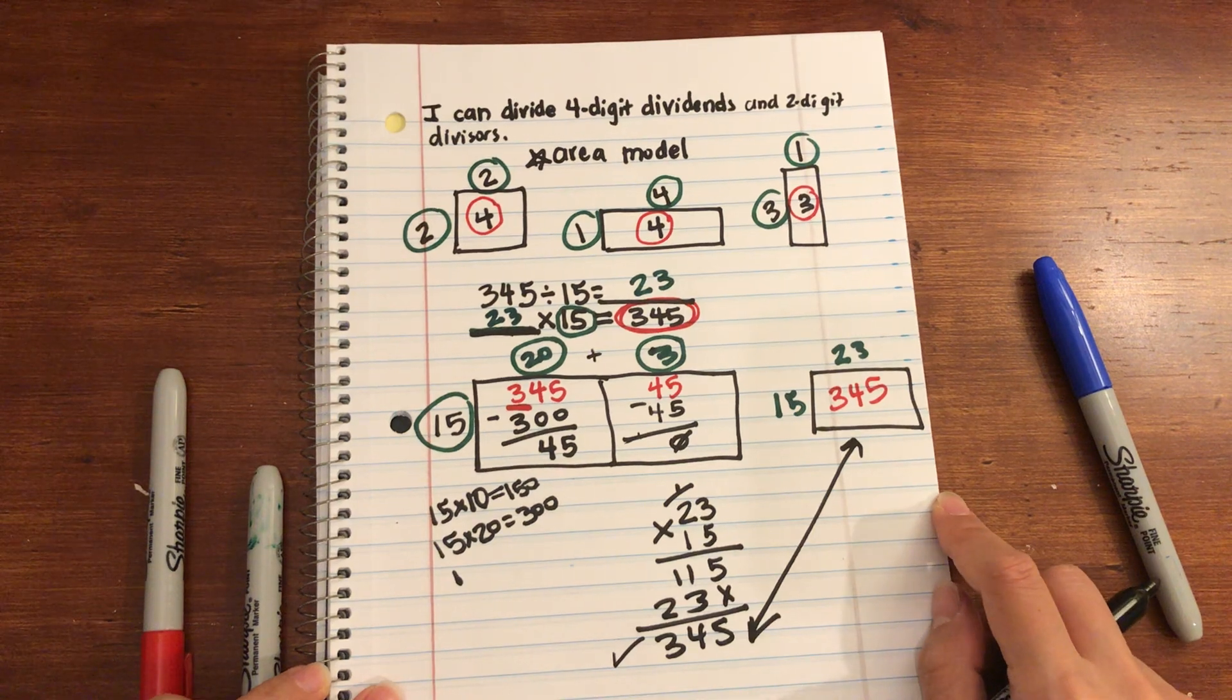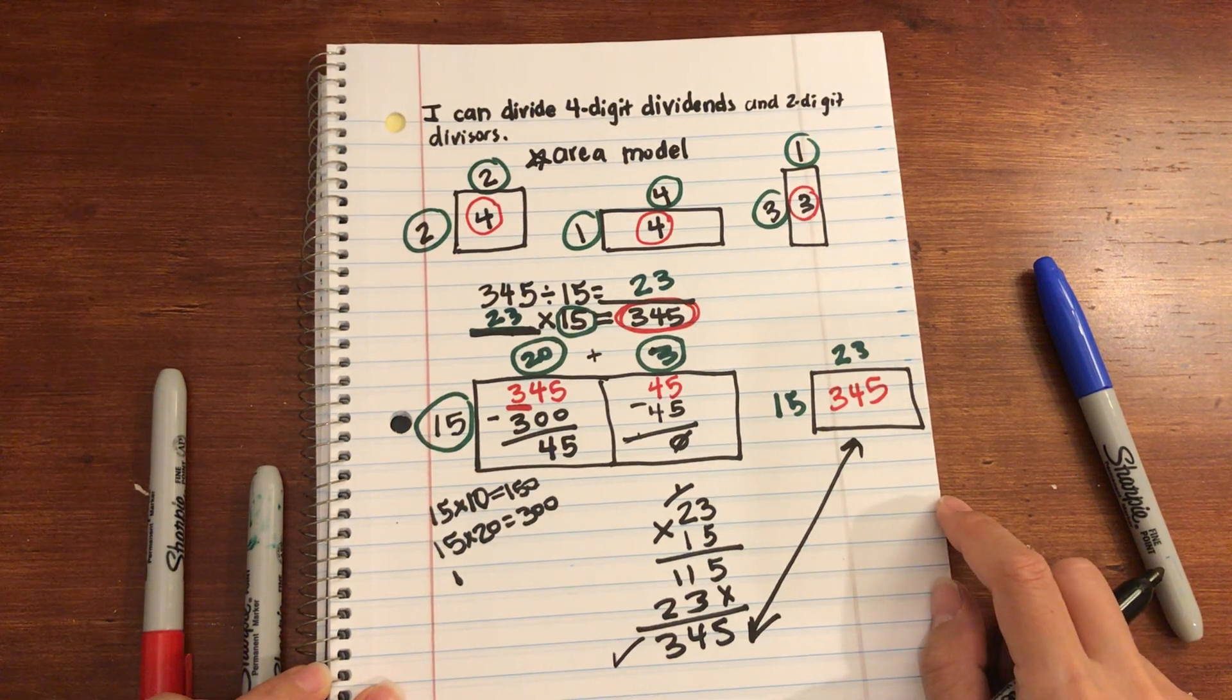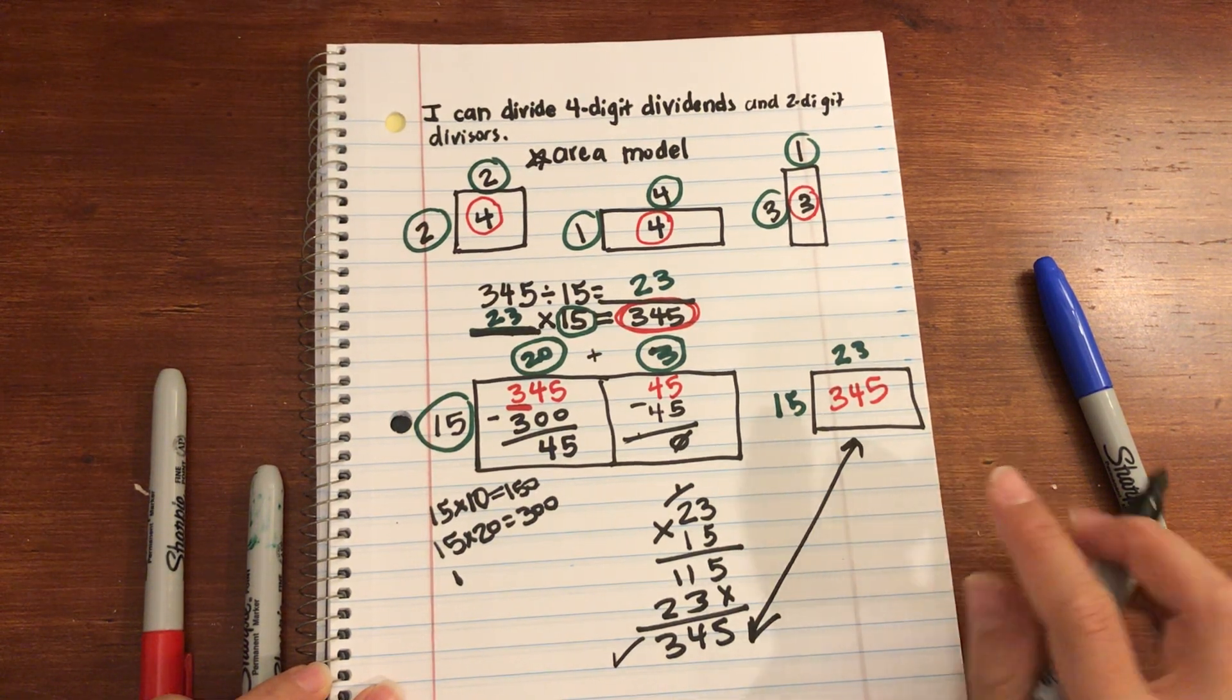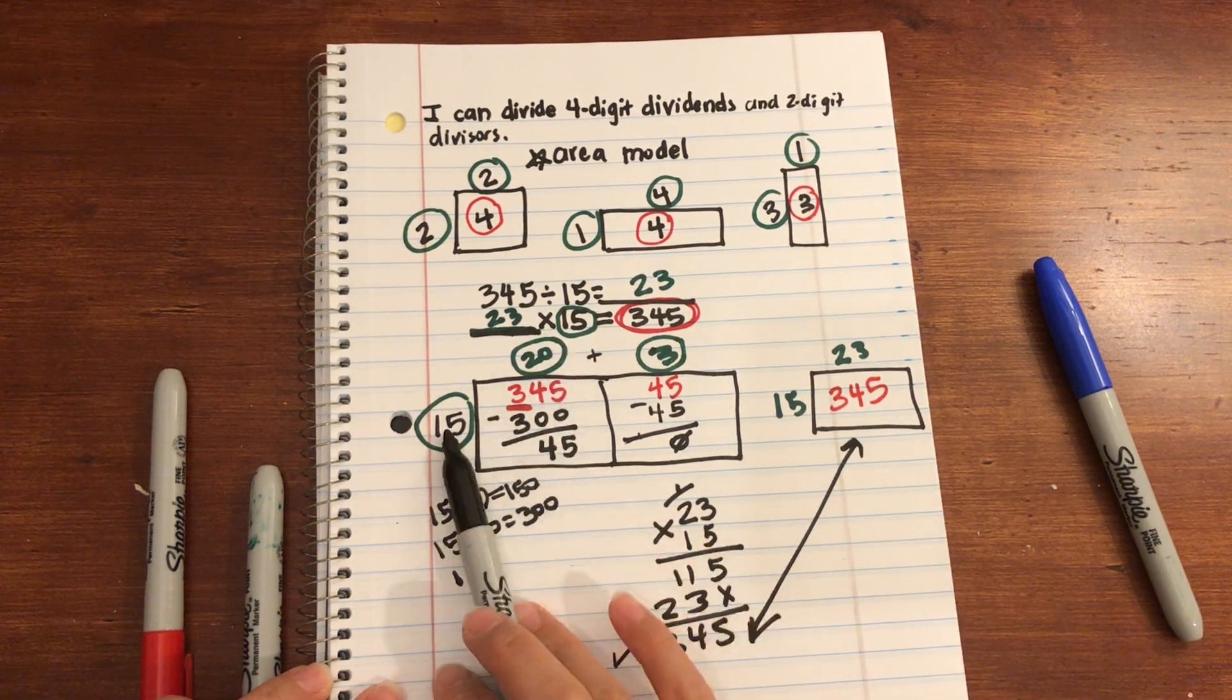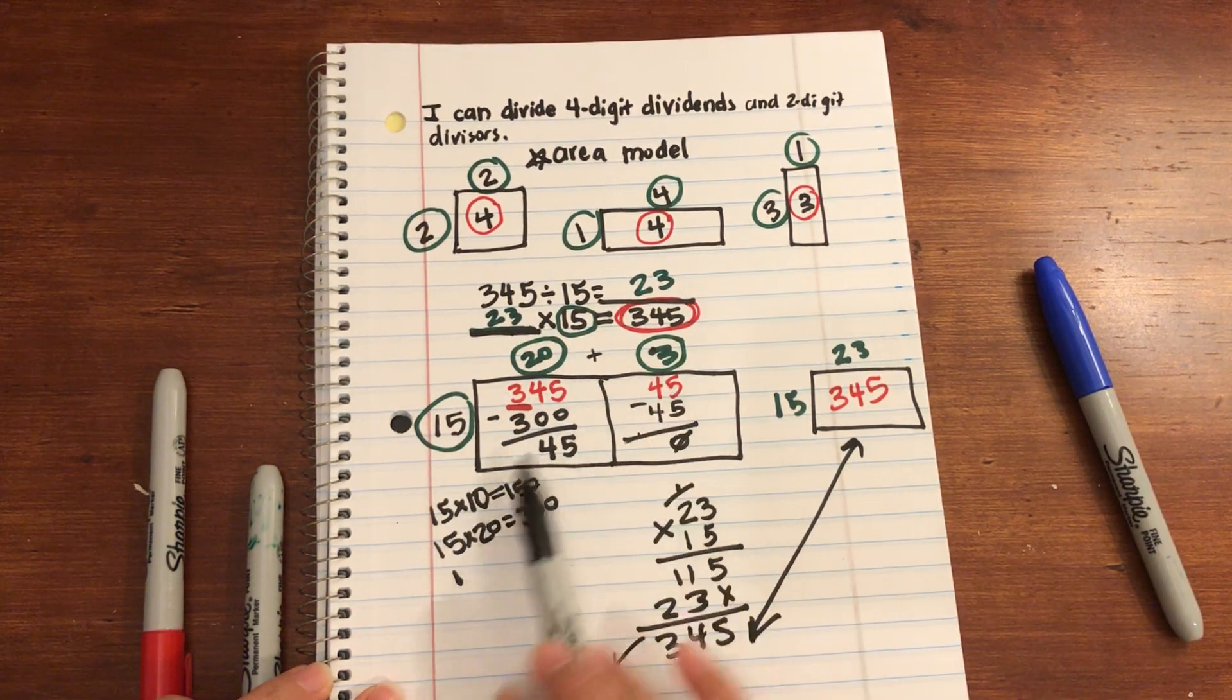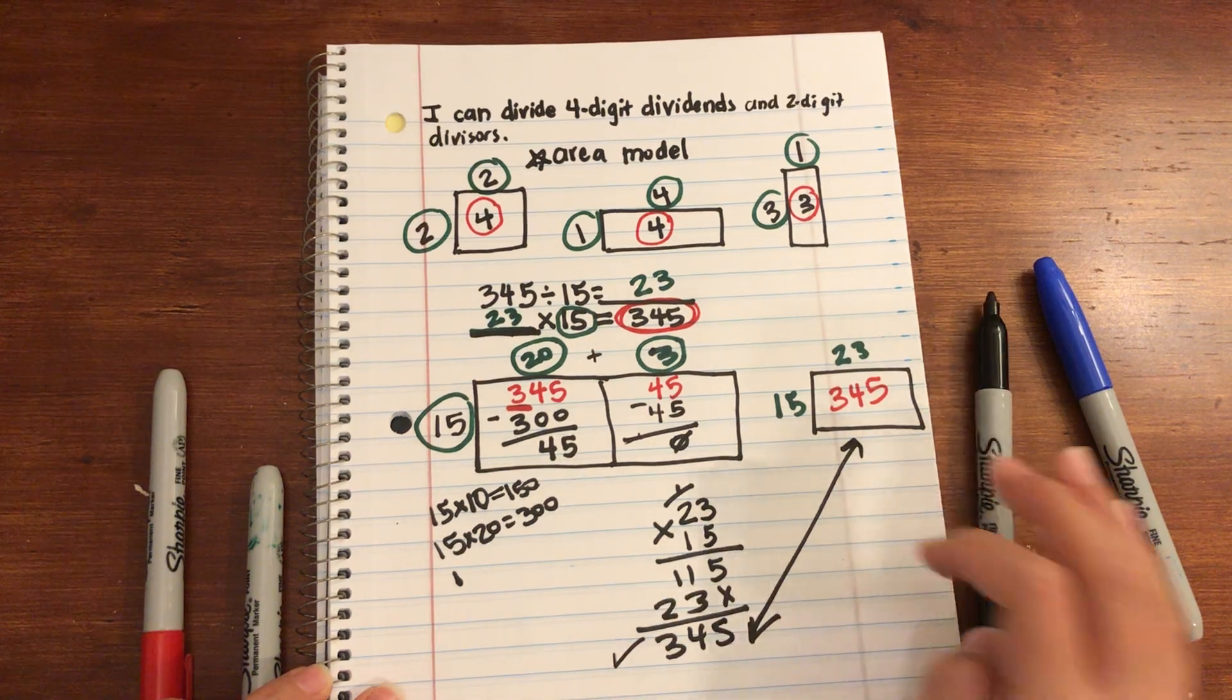All right. It's a lot of information. Area models, it takes practice. But it's a good visual to see how you can find the groups place value by place value. And that's all for today's video. We'll see you.